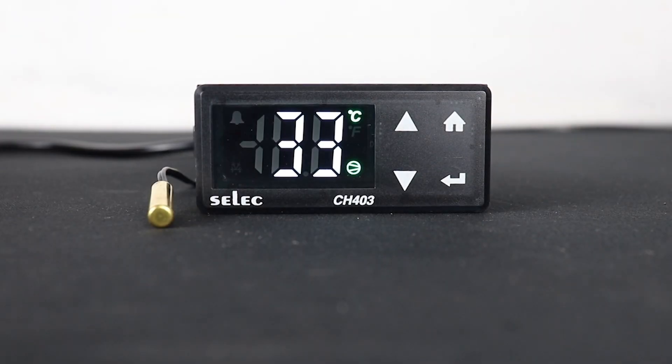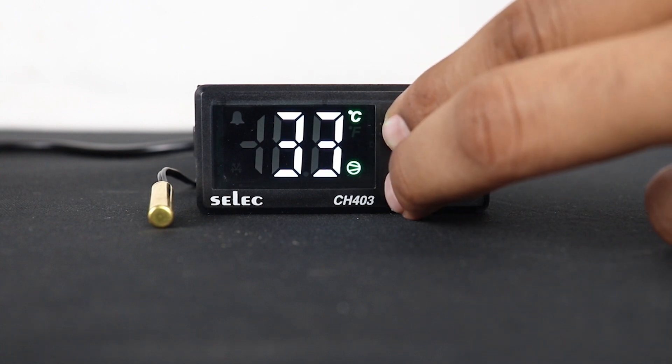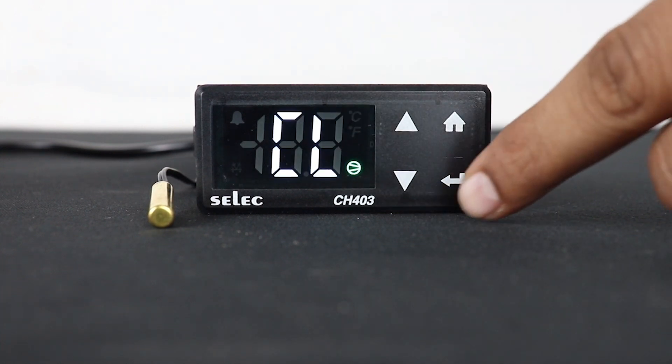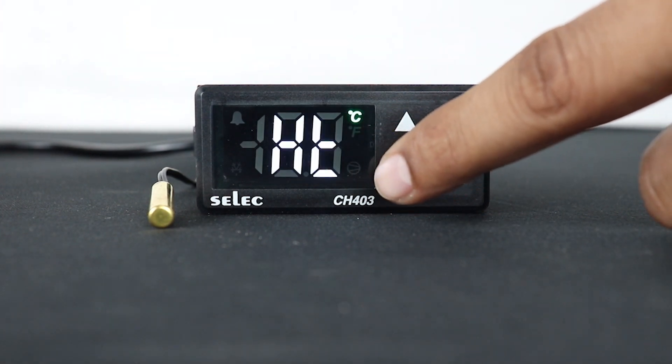To enter into the programming mode, we need to press up and down keys for approximately 3 seconds. By doing this, we will get P1 on the display which stands for controlling action of the controller. User can get the required action to either cooling or heating.